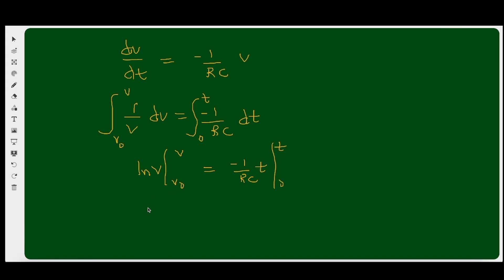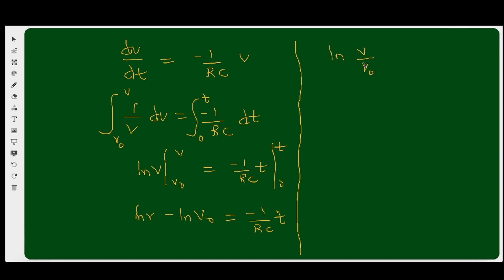Inserting the limits: ln(v) − ln(V₀) = −(1/RC)t. By the laws of logarithms, the left-hand side becomes ln(v/V₀) = −(1/RC)t. Applying the exponential, v/V₀ = e^(−t/RC).